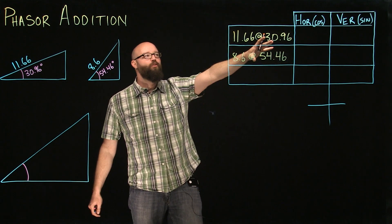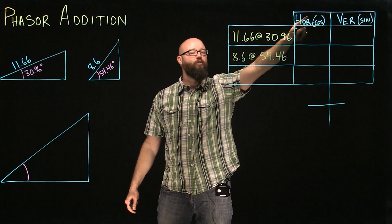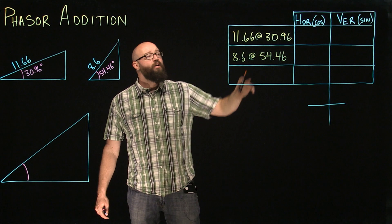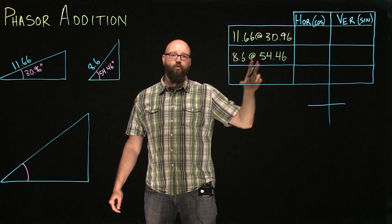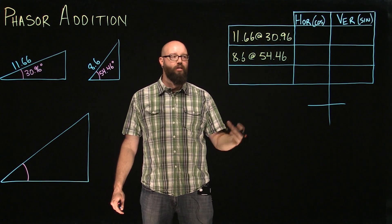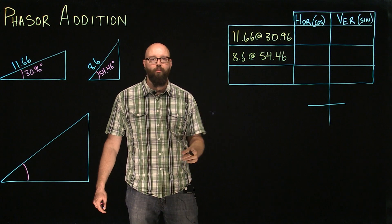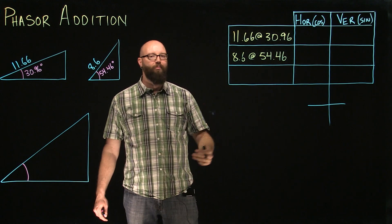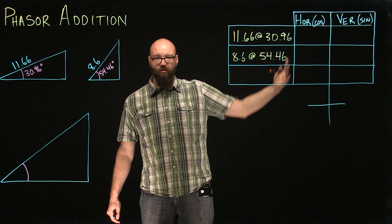Now, if you notice on the horizontal vertical chart, right beside horizontal, I've got the cos written, and right beside vertical, I have the sine written. The horizontal of our triangle is always going to be the adjacent, so we can always use the cos function when we're talking about trigonometric functions, and the vertical of our triangle is always going to be the opposite, so we can always use the sine function.